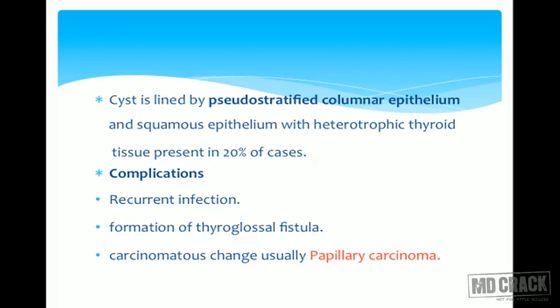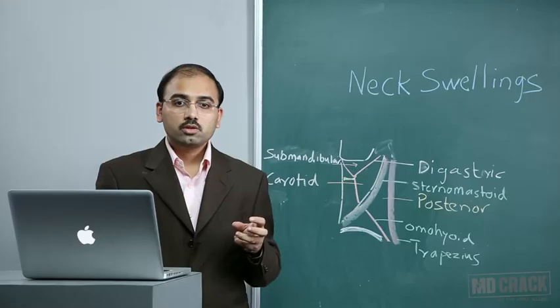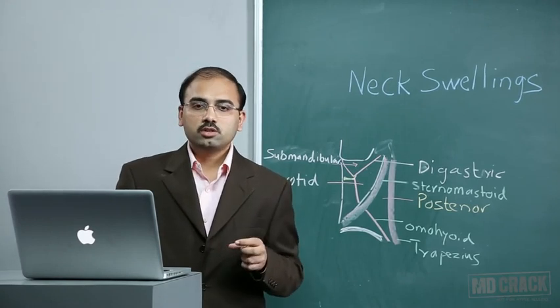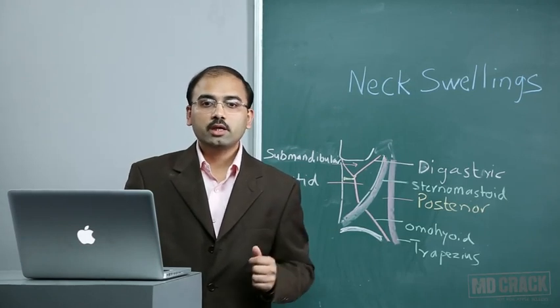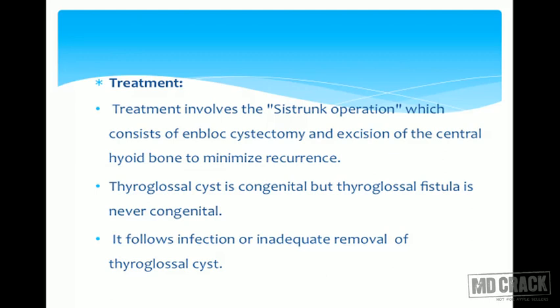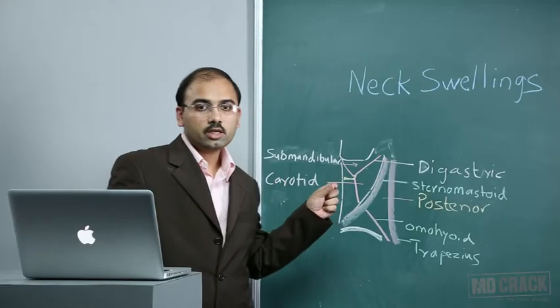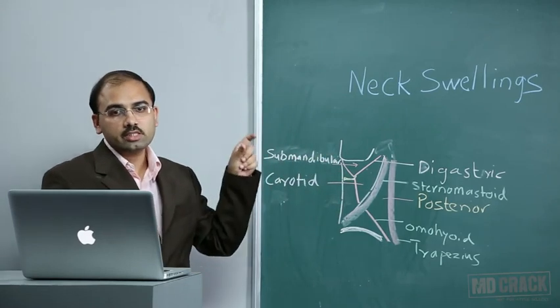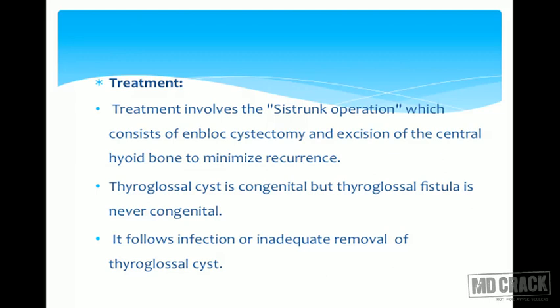Complications include recurrent infection, formation of thyroglossal fistula, and carcinomatous change — usually papillary carcinoma — in the solid component. The treatment is Sistrunk's operation, which consists of en-bloc cystectomy and excision of the central part of the hyoid bone to minimize recurrence. Importantly, thyroglossal cyst is congenital, but thyroglossal fistula is never congenital — it occurs after infection or inadequate removal.